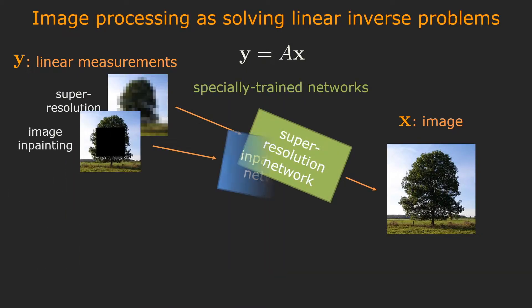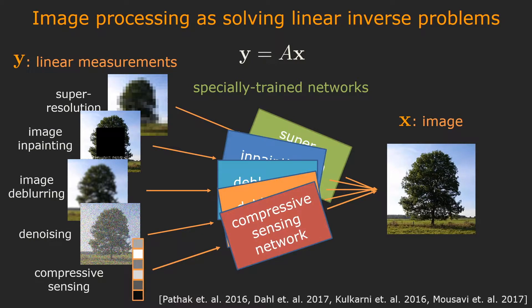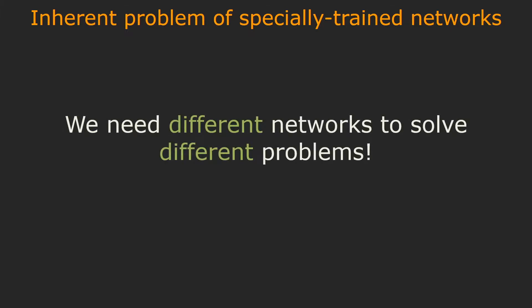To resolve the under-determined nature of the problem, state-of-the-art algorithms use specially trained deep neural nets to learn the mapping from the measurement y to the image x. Even though specially trained networks achieve state-of-the-art results, we need different networks to solve different problems. This becomes very inefficient if we want to incorporate these specially trained networks into portable devices like cell phones.